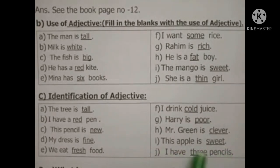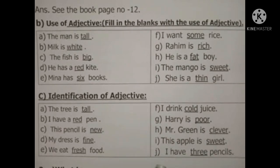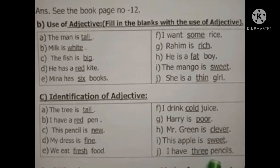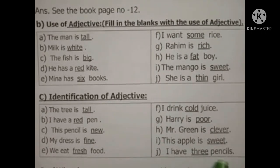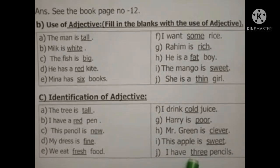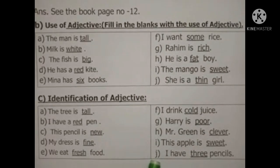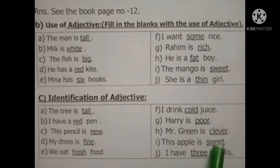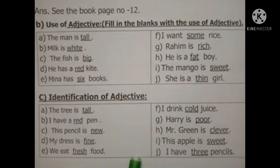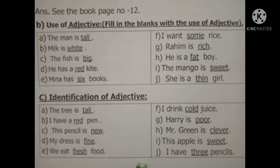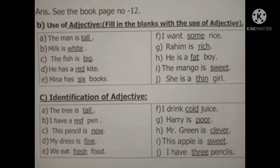'Sweet' হচ্ছে adjective। আছে তিনটা pencil — এখানে 'three' টা হচ্ছে adjective, কারণ এখানে সংখ্যা বোঝাচ্ছে। তো এই item টা অনেক সহজ। আজকের class টা আমি এখানেই শেষ করছি। সবার সুস্থ, সুন্দর জীবন কামনা করে আজকের মতো বিদায়।